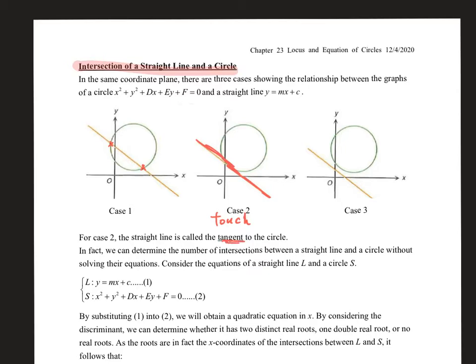The last case is shown in this picture where the circle and the line are separated from each other and there is no intersection between them.